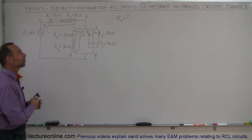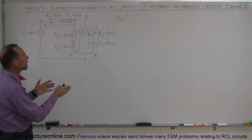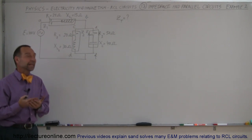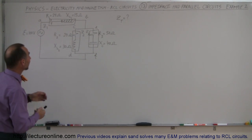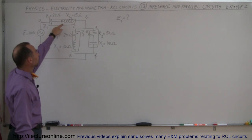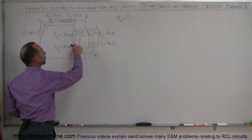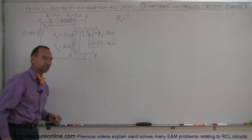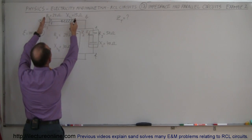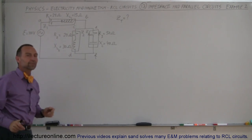Welcome to ElectronLine. We're going to do a more complicated combination of parallel and series circuit and try to find the impedance on that circuit. Notice that the series branch has a resistor and an inductor, and the two parallel branches each have a resistor — one has an inductor and the other has a capacitor. We can consider the impedance of each branch separately.